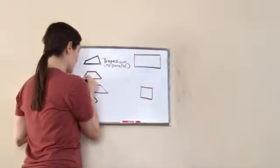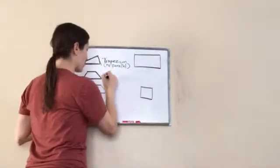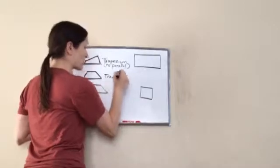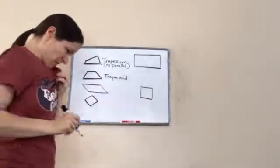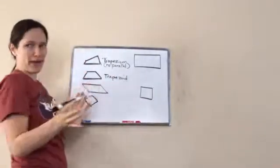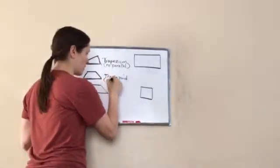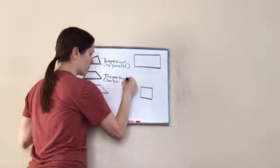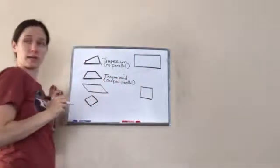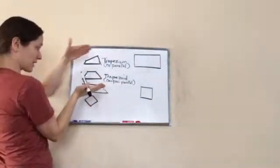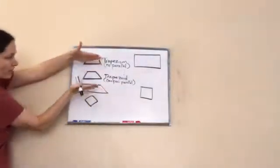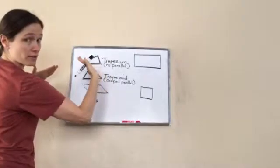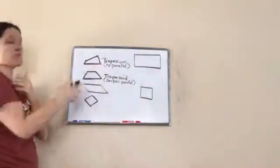This one is a trapezoid. A trapezoid has one pair of parallel sides — one pair that's parallel. See, these two are parallel, these two are not. So: one pair parallel.